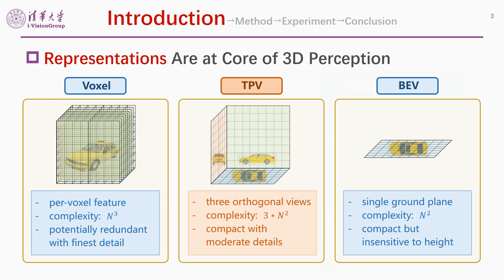We think representations are crucial for effective 3D perception. Although voxel representation provides the finest detail, it is potentially redundant and has cubic complexity. As a workaround, BEV representation uses only ground planes to encode the whole 3D space and height fields to capture height information. To this end, we propose tri-perspective view as an effective and efficient expressive 3D representation.